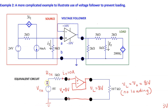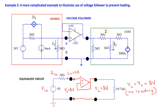However, if we interconnect the source and the load using a voltage follower, it can be easily shown that the output voltage is now 8 volts. That is, the voltage follower prevents the load from disturbing the source, and this avoids loading.